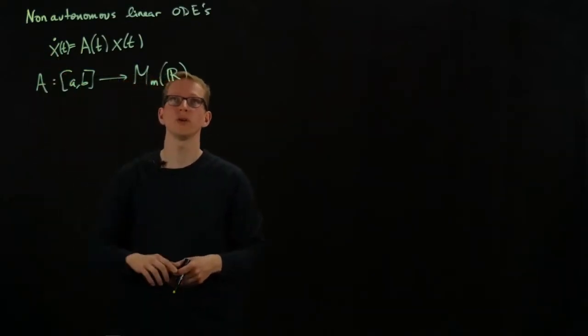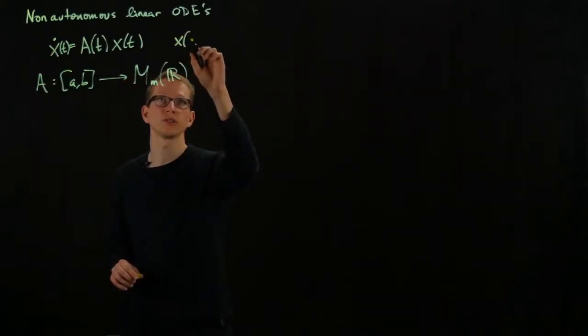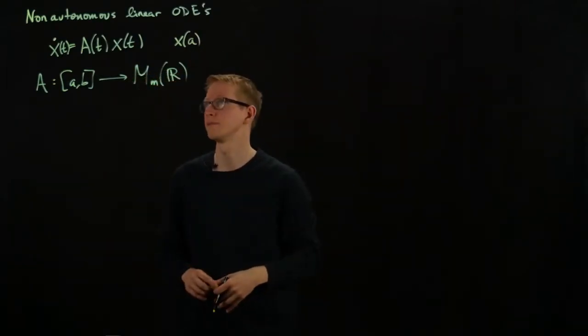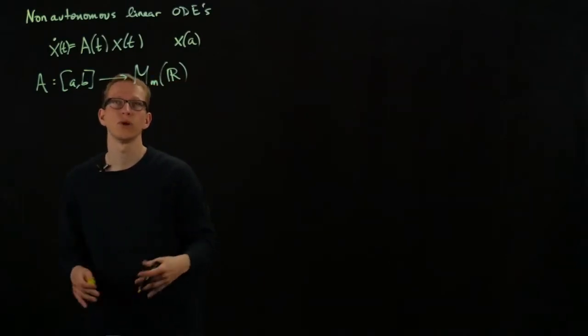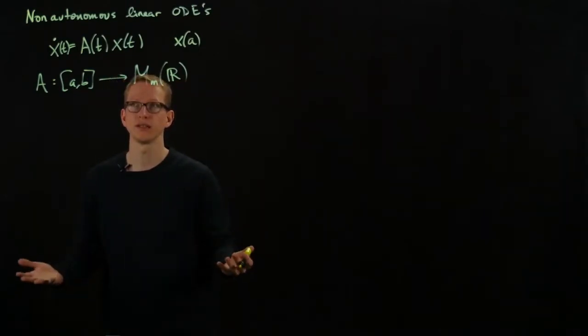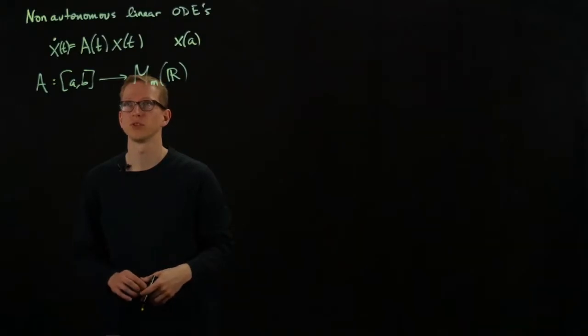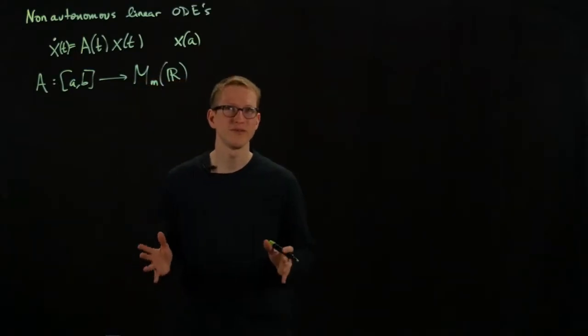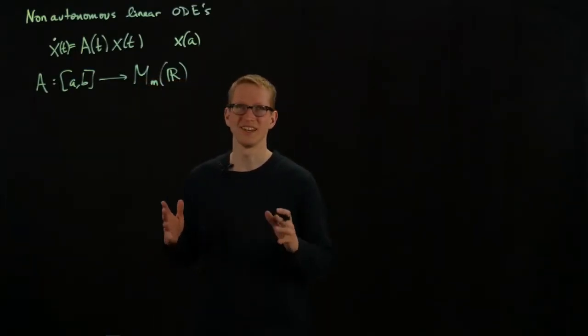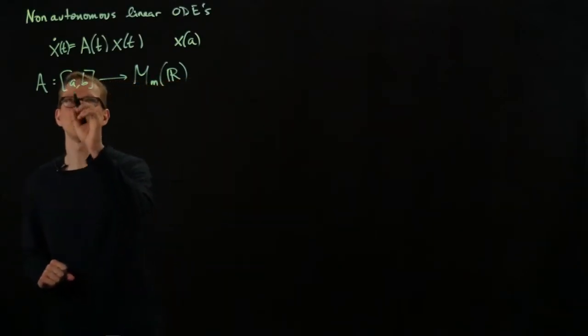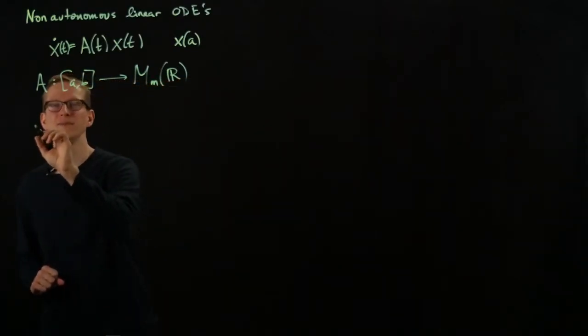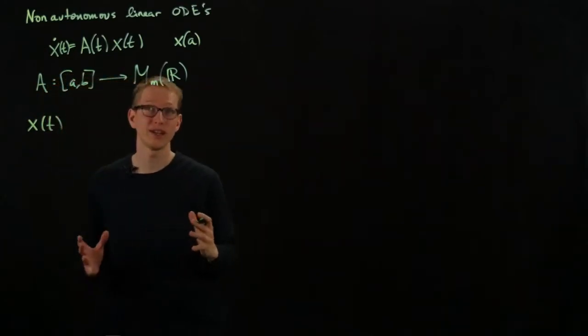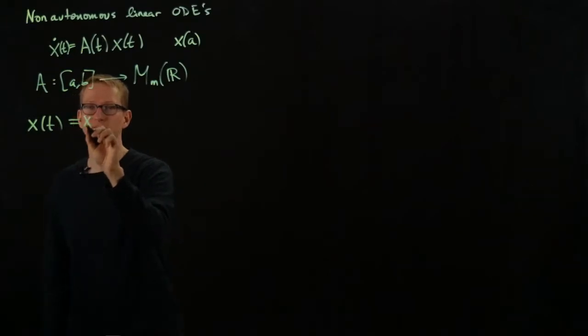And the ODE is of this form, and again we have some initial condition, but this time our initial condition is just the initial position x at a. Well, if we interpret x to be position, but again these could be just arbitrary variables. So it's actually going to be funny how we solve this system. You might say this is totally useless, but we can actually rewrite this ODE in the following way by integrating, and we can write it as an integral equation that looks like this.